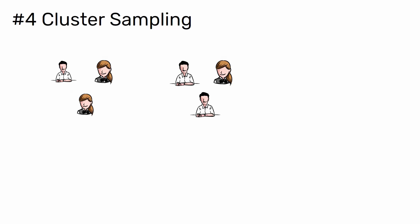4. Cluster sampling. Cluster sampling involves dividing a population into groups with similar characteristics. Instead of picking individuals from each group, you choose entire groups at random to get your sample.